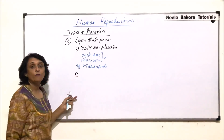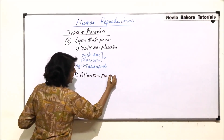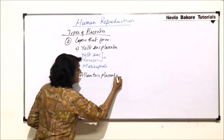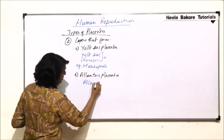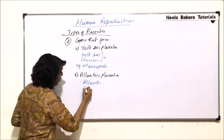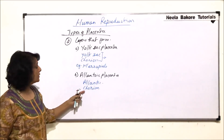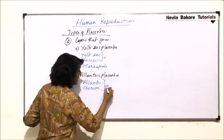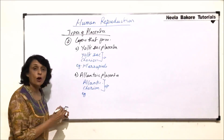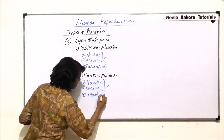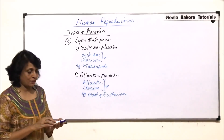The second type of placenta is known as allantoic placenta. This placenta develops from two extra embryonic membranes: allantois and chorion. These two layers form the placenta. This is seen in most of the eutherians, which are placental mammals.